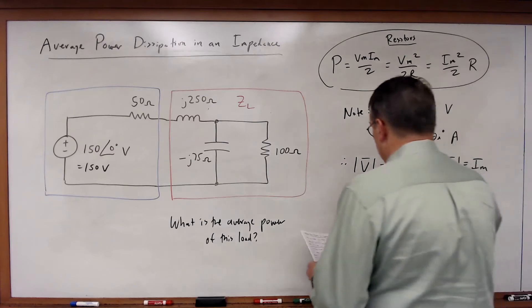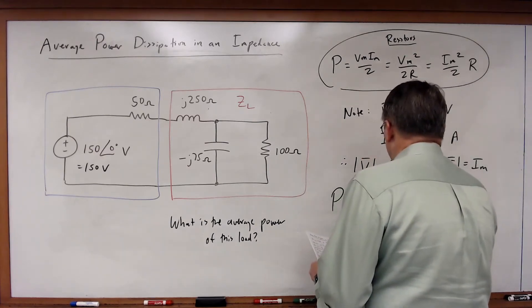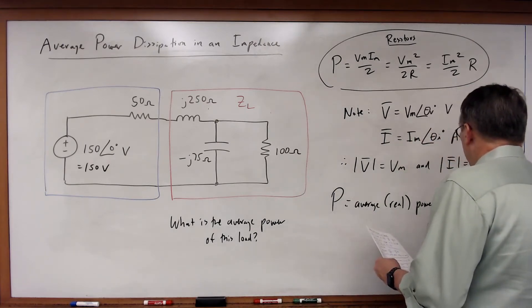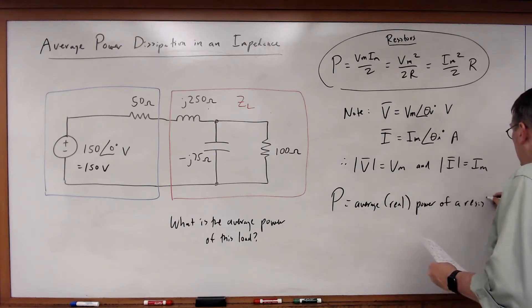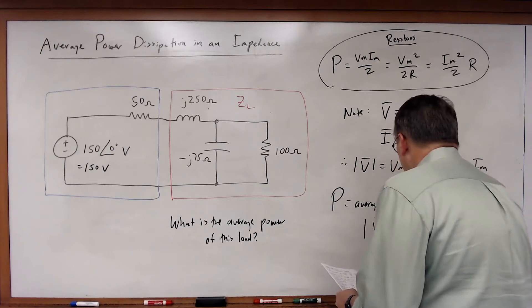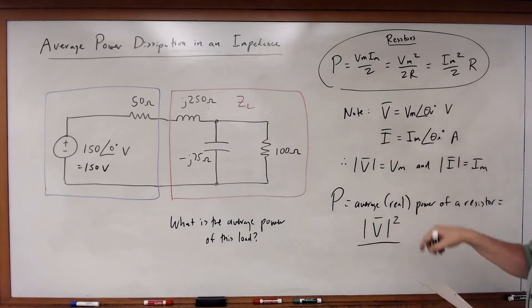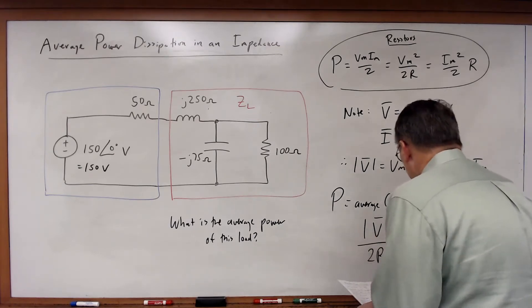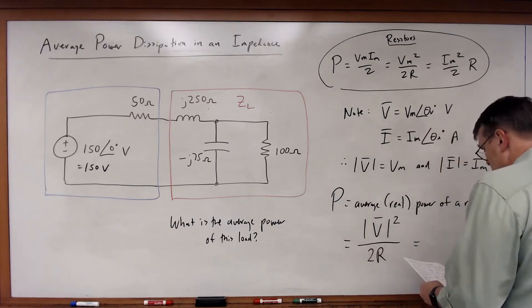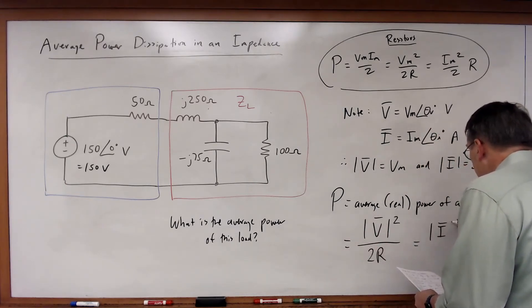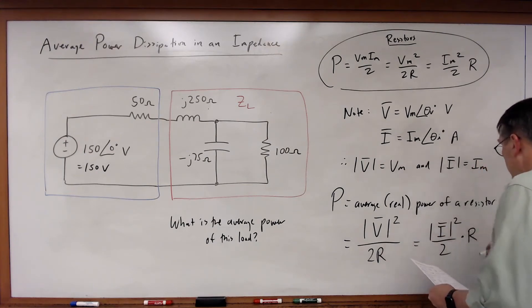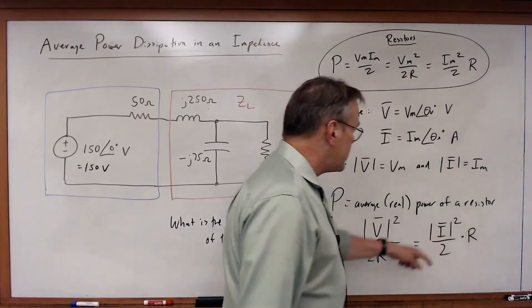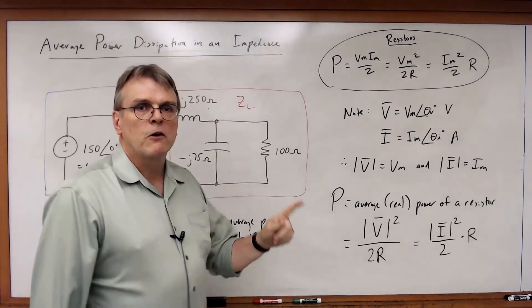So I can rewrite this resistor equation, where the real or average power of a resistor is therefore equal to the magnitude of the voltage phasor squared divided by 2R, or equal to the magnitude of the current phasor squared divided by 2 times R, where V and I are the voltage and current phasor for the resistor.